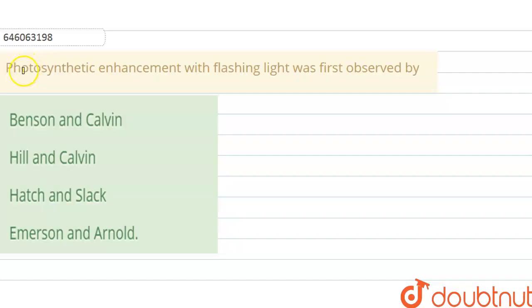Hello student, the question is: photosynthetic enhancement with flashing light was first observed by Benson and Calvin, Hill and Calvin, Hatch and Slack, or Emerson and Arnold.